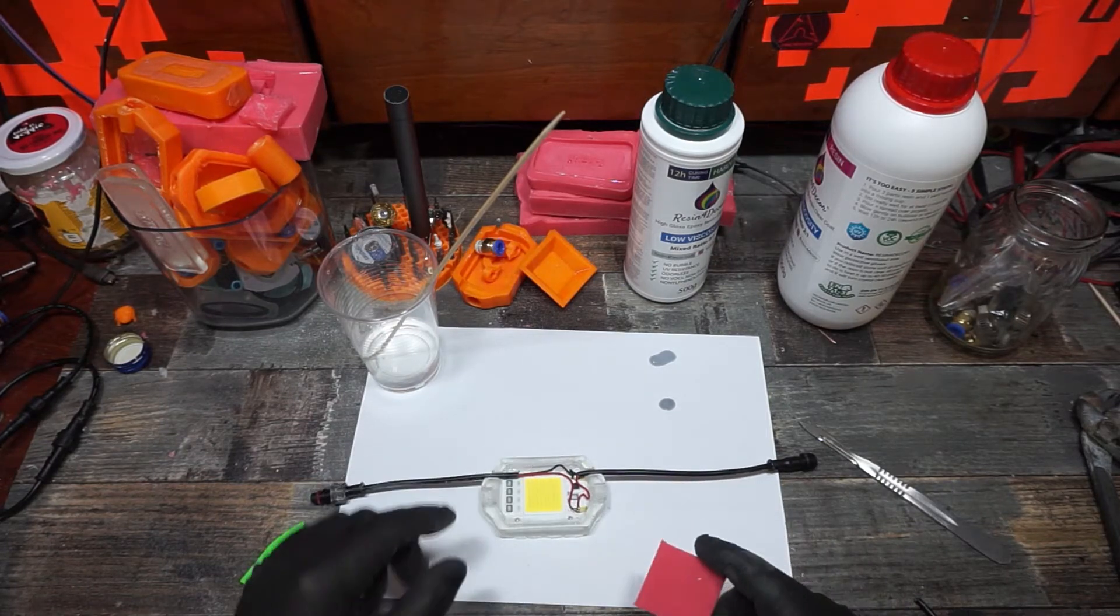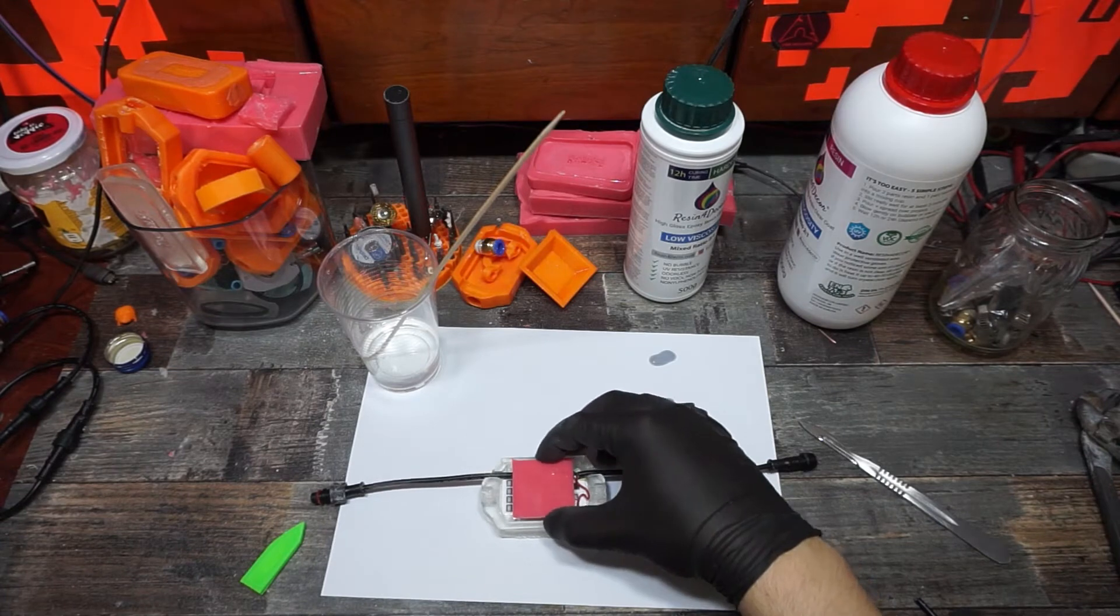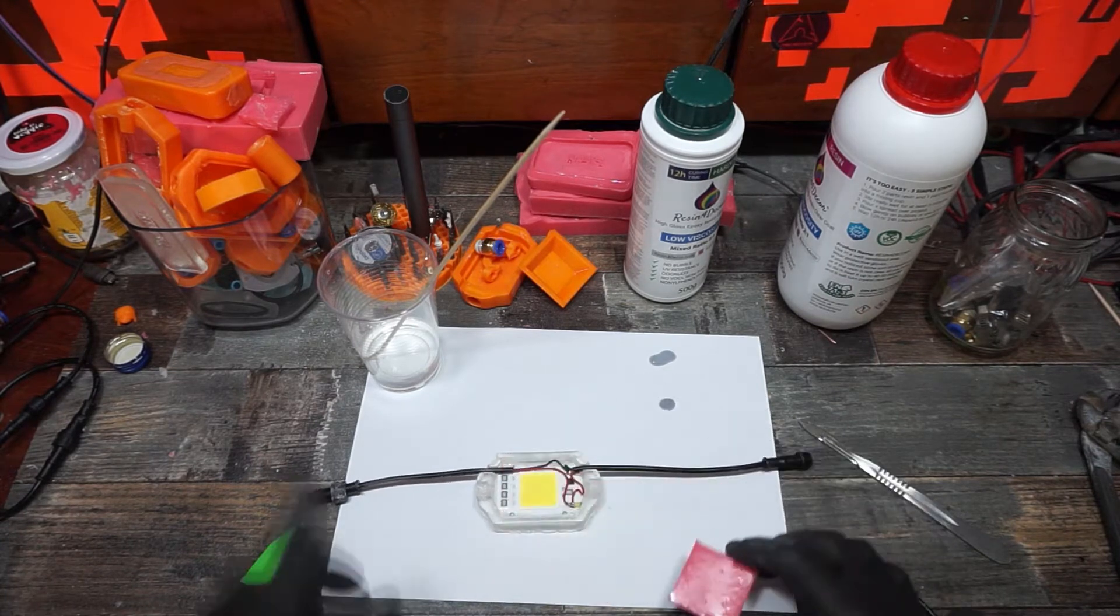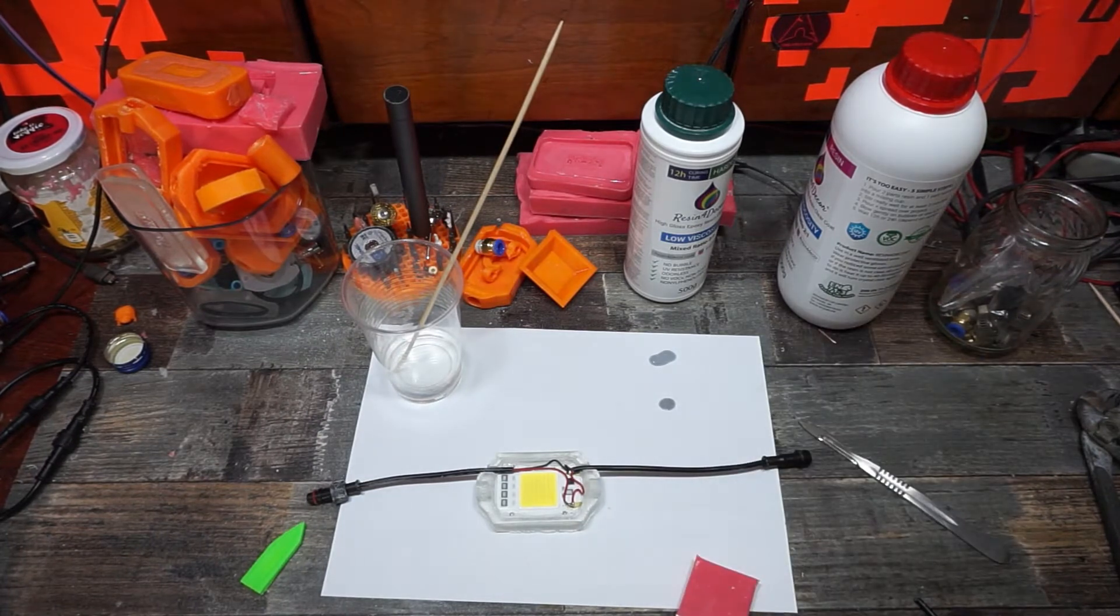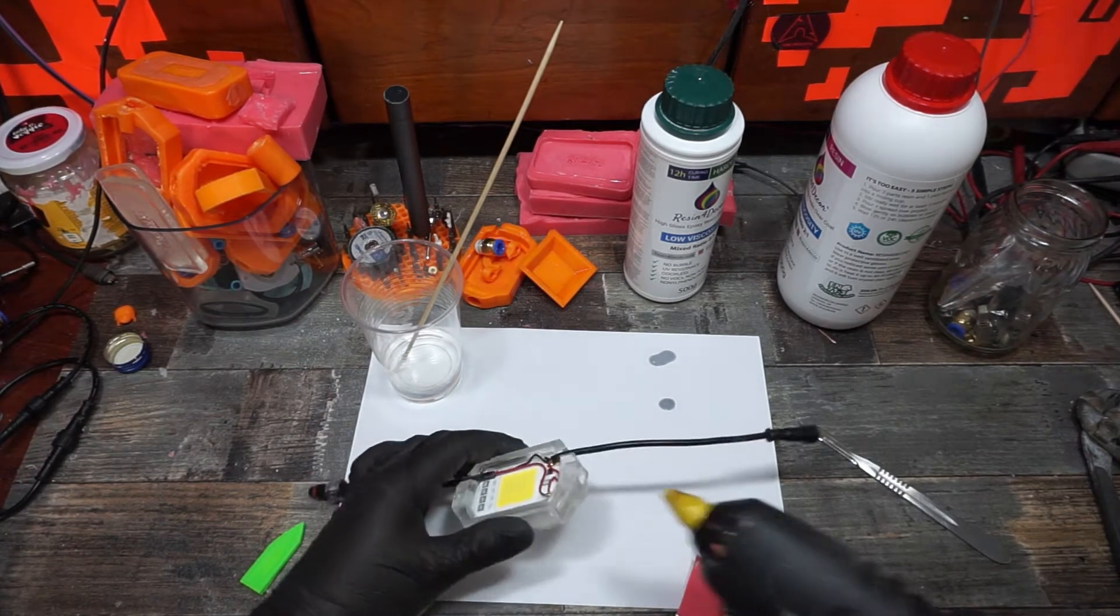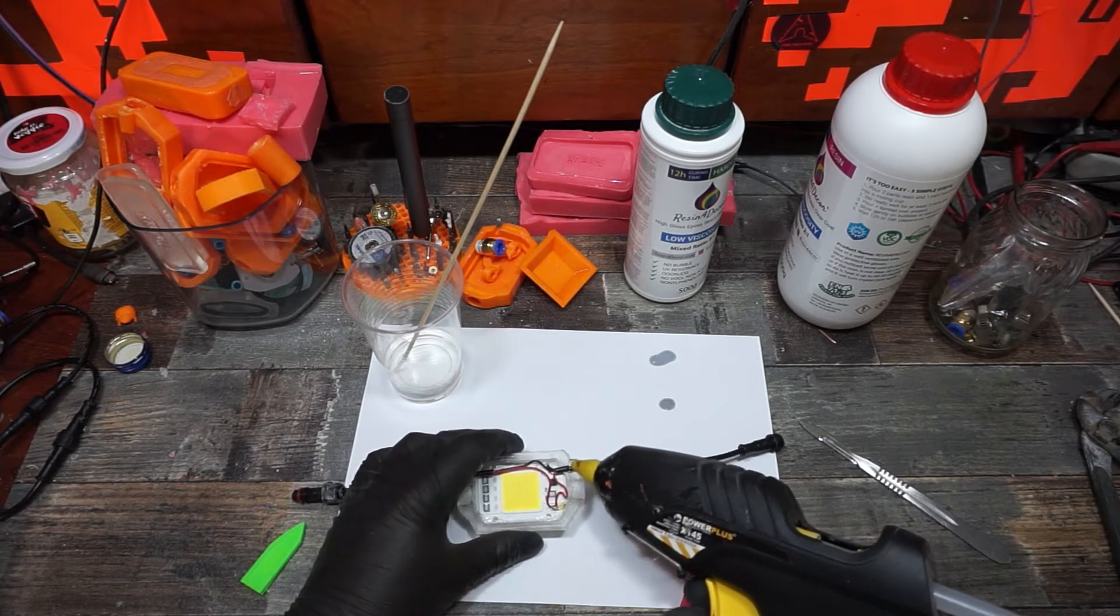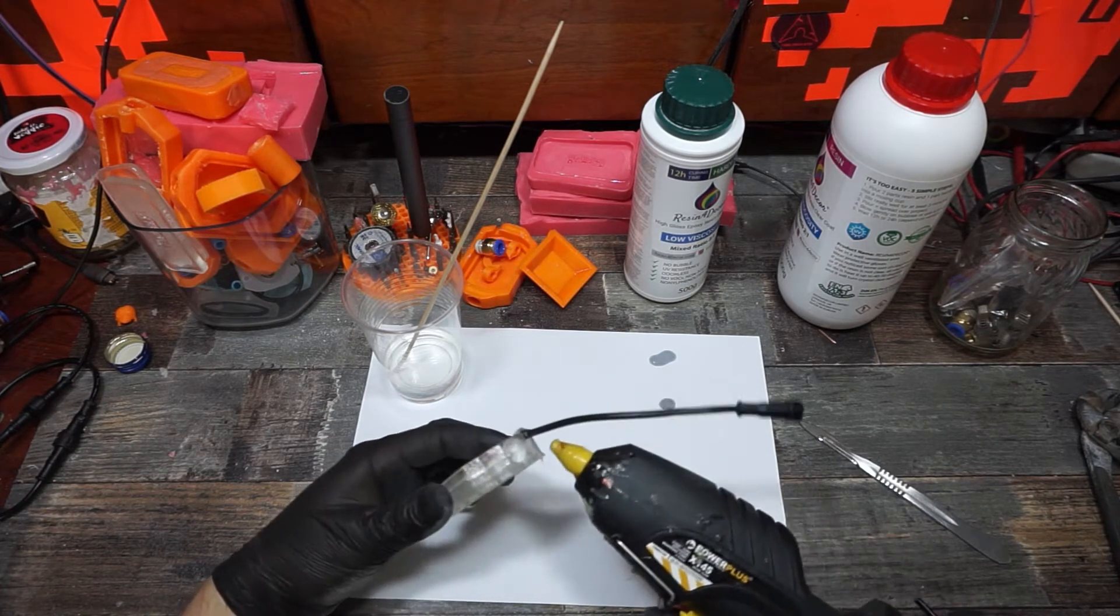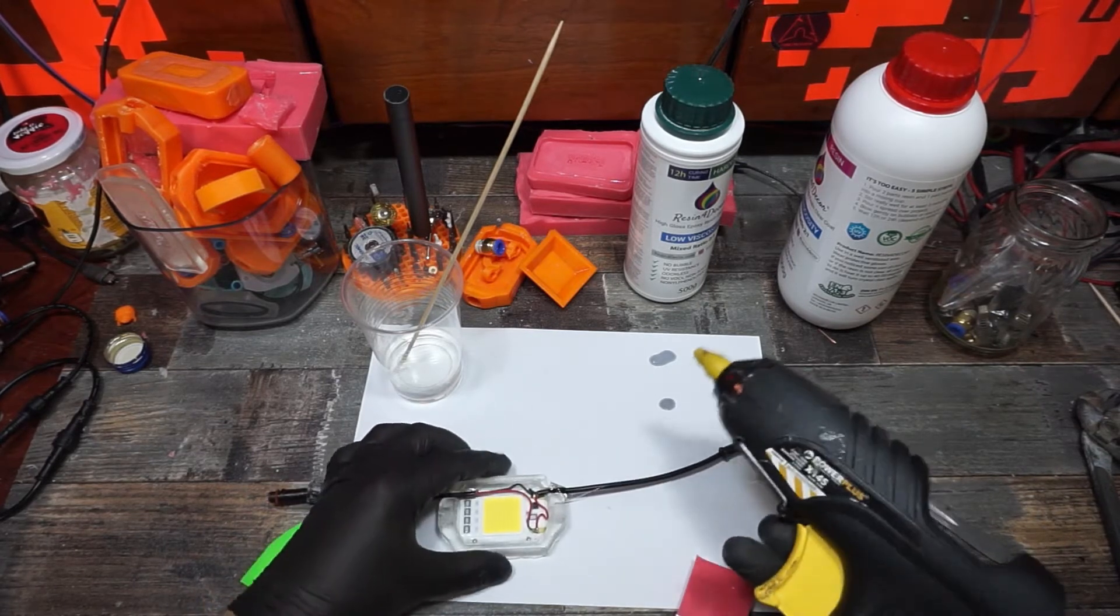Next thing we're gonna do is place this one, this is the proxy blocker for the top. Also what we're gonna do is put a block of hot glue at those ends here so we have this fixed.